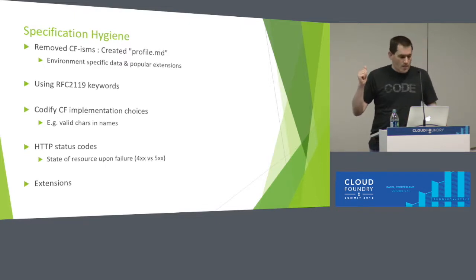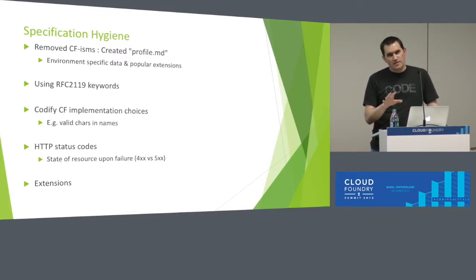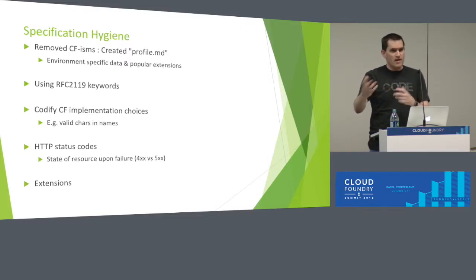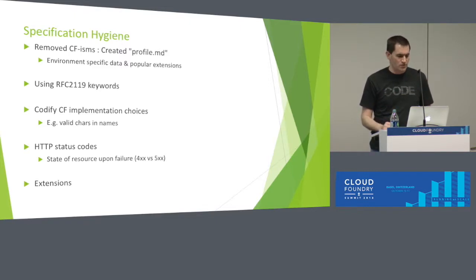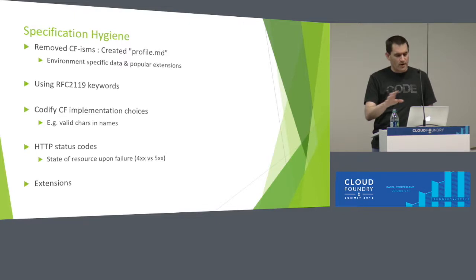The other thing we did was turn the document into a real spec by using RFC 2119 keywords — musts, shoulds, what's required, what's optional. The old document kind of implied what was required using phrases like 'the platform will do this,' which is fuzzy. You don't know for sure whether that means it can, may, or must do it. So we added RFC 2119 keywords, and hopefully in that process we didn't change any of the semantics — everything that was optional before should still be optional, required stuff still required.